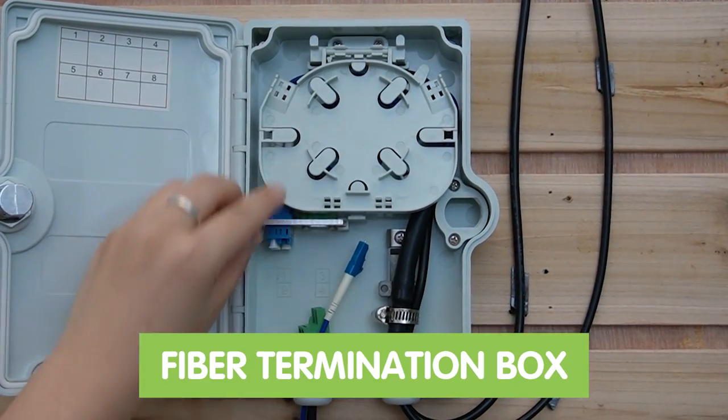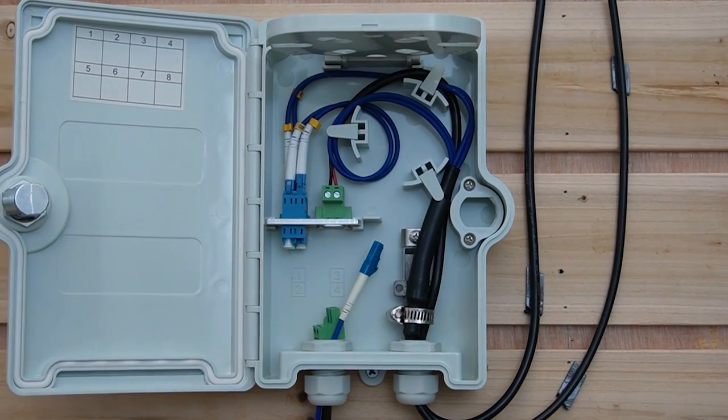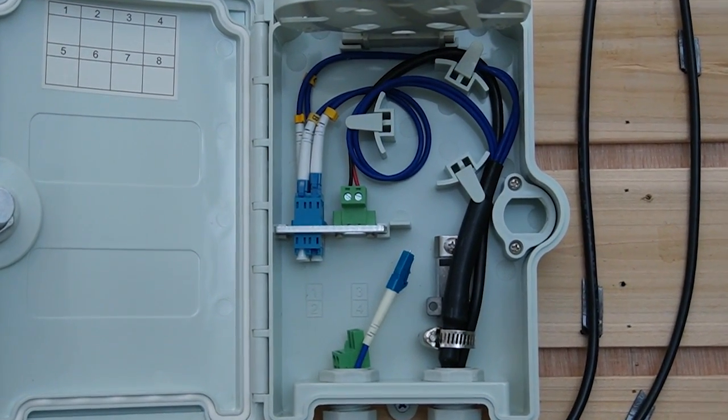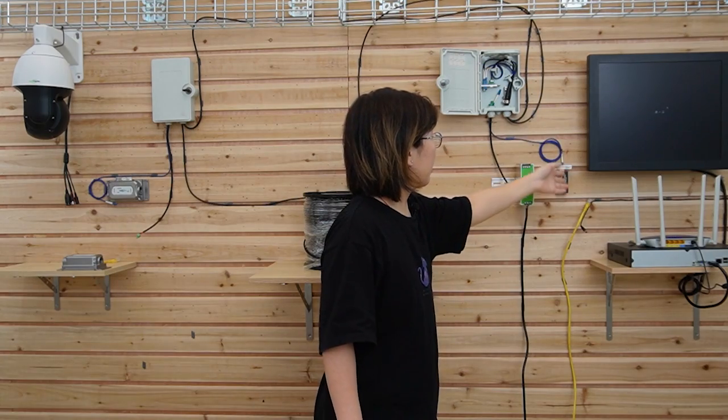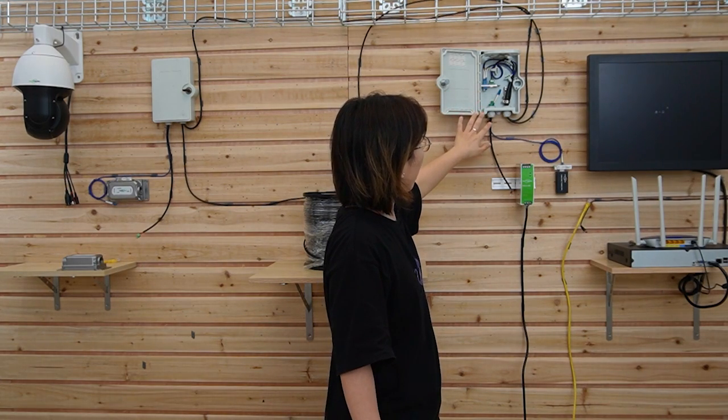Now this is the termination box. You can see there are two cables inside. One is the fiber optic cable connected with the media converter. And the other is the power cord connected to our power supply.